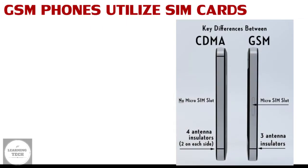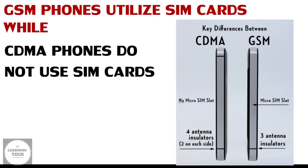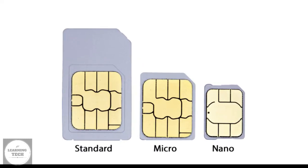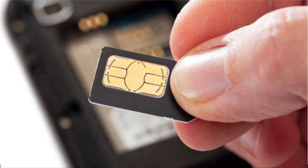GSM phones are the ones that utilize SIM cards, while CDMA phones do not. SIM cards are the small cards which contain a chip that must be inserted into GSM phones before they will work. Without a SIM card, a GSM phone won't be able to tap into any mobile network.